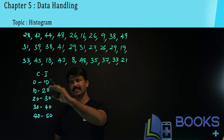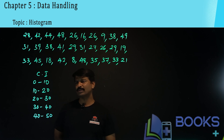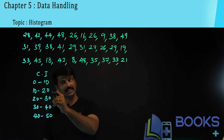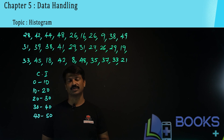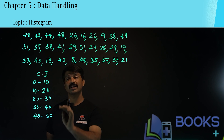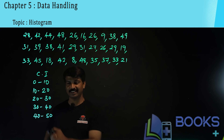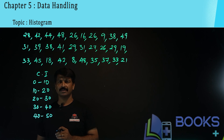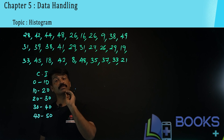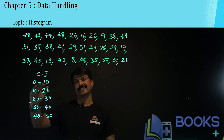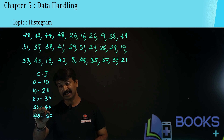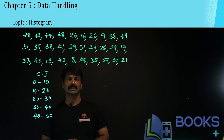Now, what do you call the 10 in the interval 10 to 20? It is called the lower limit of the second class interval. What is 20? It is the upper limit of the second class interval. What is 40? It is the upper limit of the fourth class interval, and also the lower limit of the fifth class interval. If a student gets 10 marks, you include them in the second class interval. If a student gets 30, you should include that in the fourth class interval, not the third.